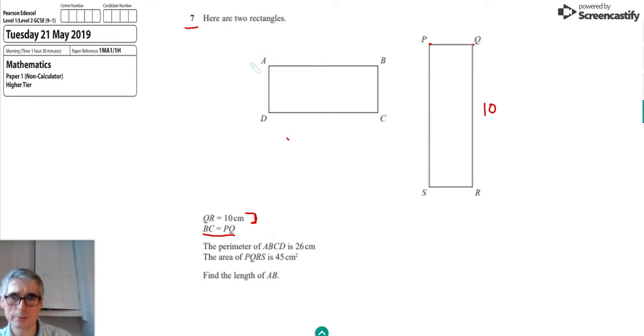We're also given the perimeter of this rectangle ABCD. We're told that that is 26 centimeters. So that's the distance all the way around the outside. And we're told that the area of PQRS equals 45 centimeters squared. So that's the area of this one. And what we've been asked to do is find the length of AB. So that's from here to here.